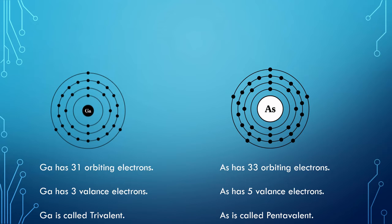So we saw the Bohr model structures of silicon, germanium, gallium, and arsenic. What are valence electrons? The term valence is used to indicate the potential required to remove any one of these electrons from the atomic structure.